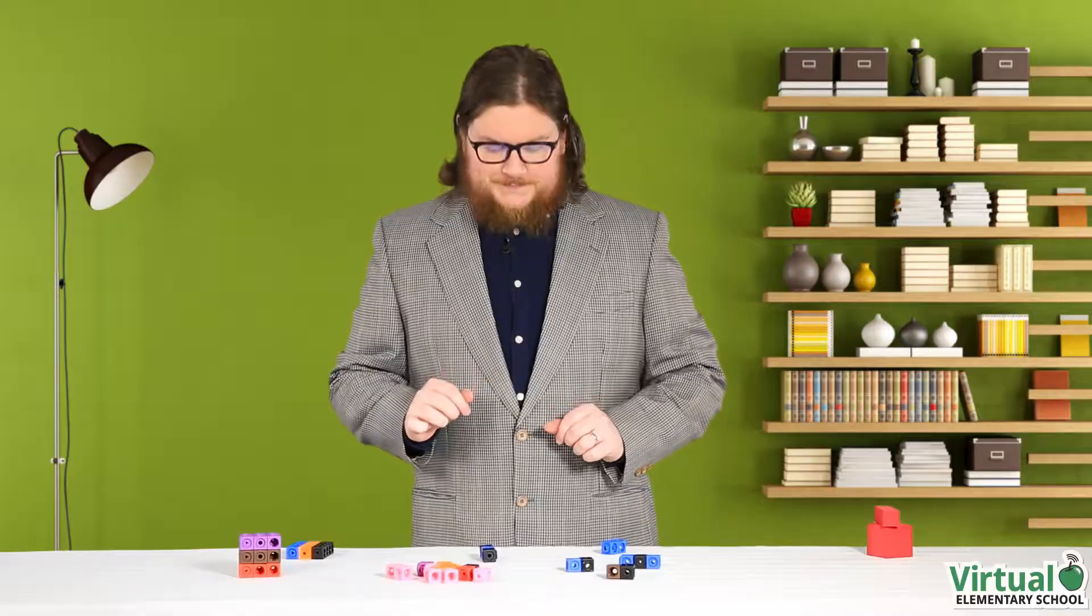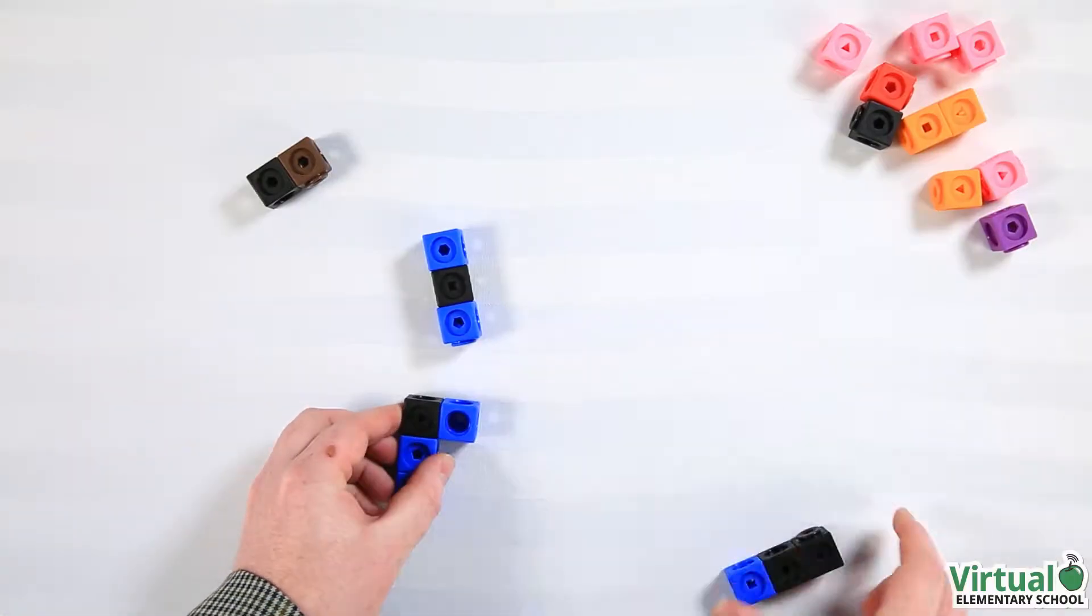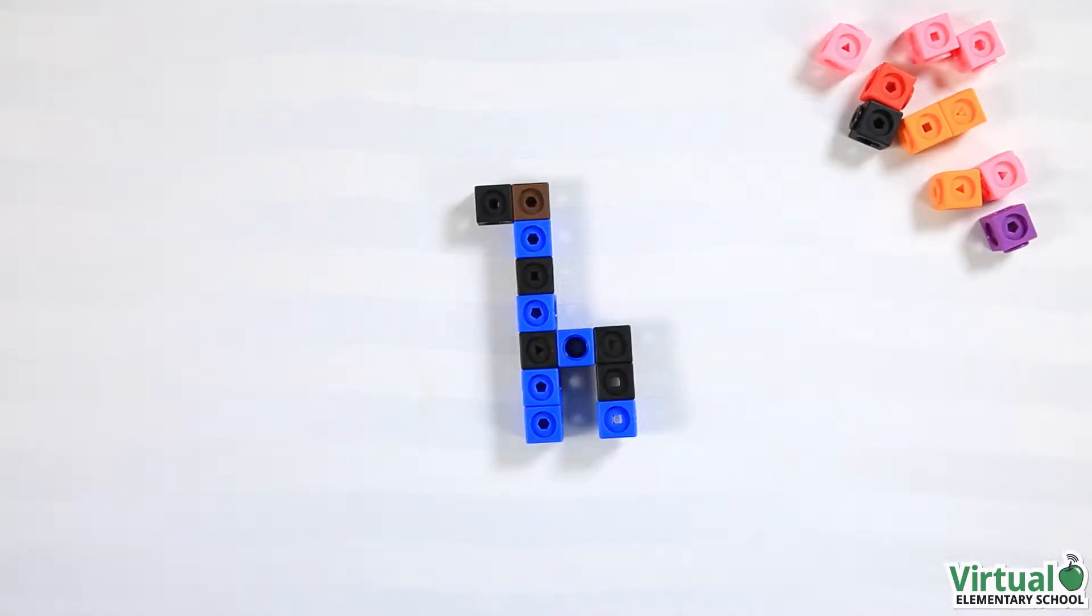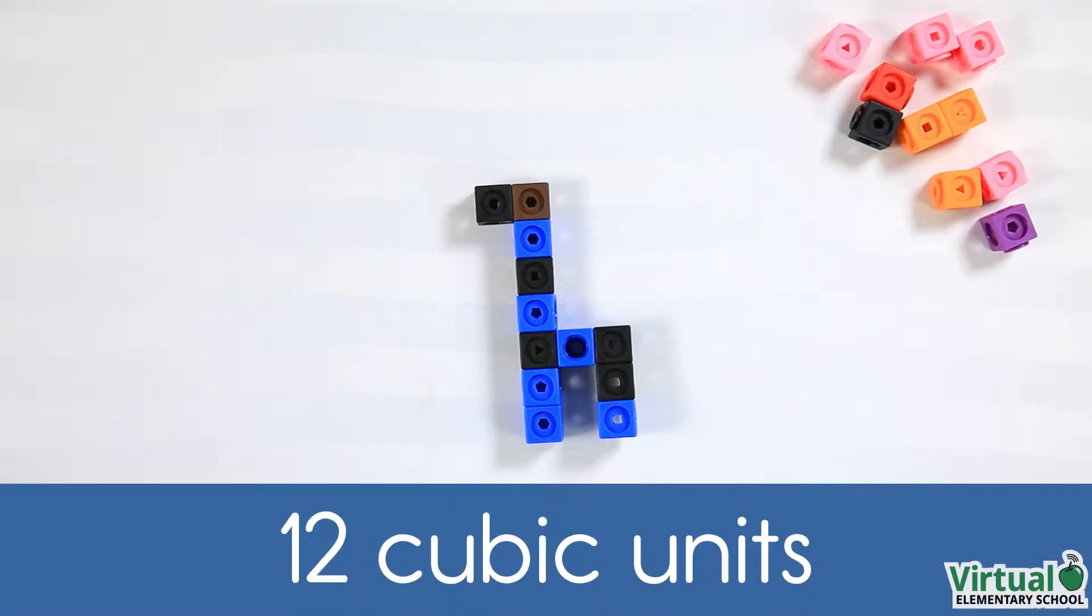Let's build a small object and measure its volume. It took 12 cubes to build this giraffe. That means the volume of this giraffe is 12 cubic units.